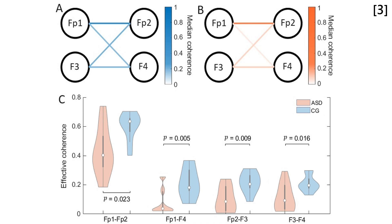Wavelet phase coherence measures the similarity in phase difference of two signals across time, and measures functional connectivity by evaluating the phase synchrony between brain regions. Figures A and B illustrate the median coherence between the frontal probe combinations — the blue lines of Figure A represent the control group and orange lines of Figure B represent the ASD group. The violin plots of Figure C illustrate the distribution of the data, and the p-values are found using the Wilcoxon rank-sum test. Significant differences across all frontal probe combinations were found.